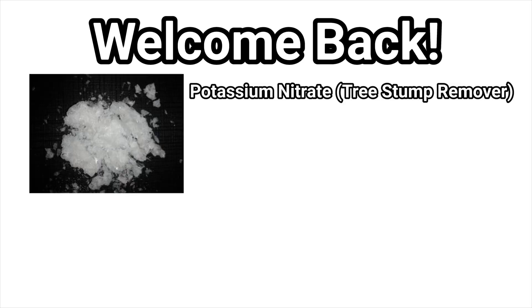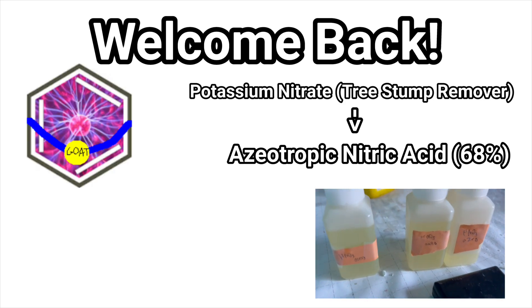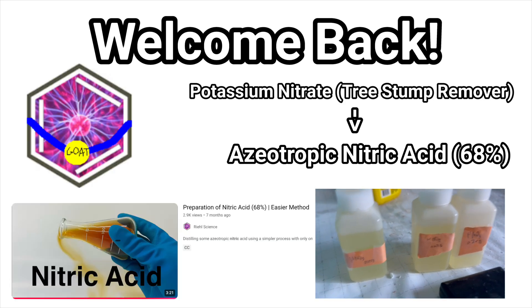Hello everyone! Today, we're going to be turning ordinary potassium nitrate tree stump remover into 68% azeotropic nitric acid using the GOAT Real Sciences method, which requires only one distillation.